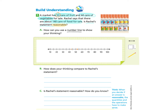Using this number line, I'm going to look for the closest 10 that these numbers round to. 44 is pretty close to 50, so we could round 44 to 50. And 53 is actually pretty close to 50 as well. So if we're estimating, we have 50 and 50, which make 100. Rachel's statement of 140 cans is not close to our estimation of 100.